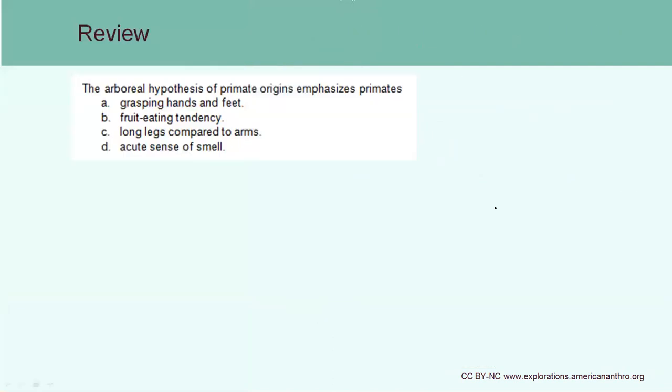Review question: The arboreal hypothesis of primate origins emphasizes that primates — A, have grasping hands and feet; B, have a fruit-eating tendency; C, long legs compared to arms; or D, acute sense of smell. Remember that arboreal has to do with being in the trees, and to be able to grasp the branches of the trees, you need A — grasping hands and feet.